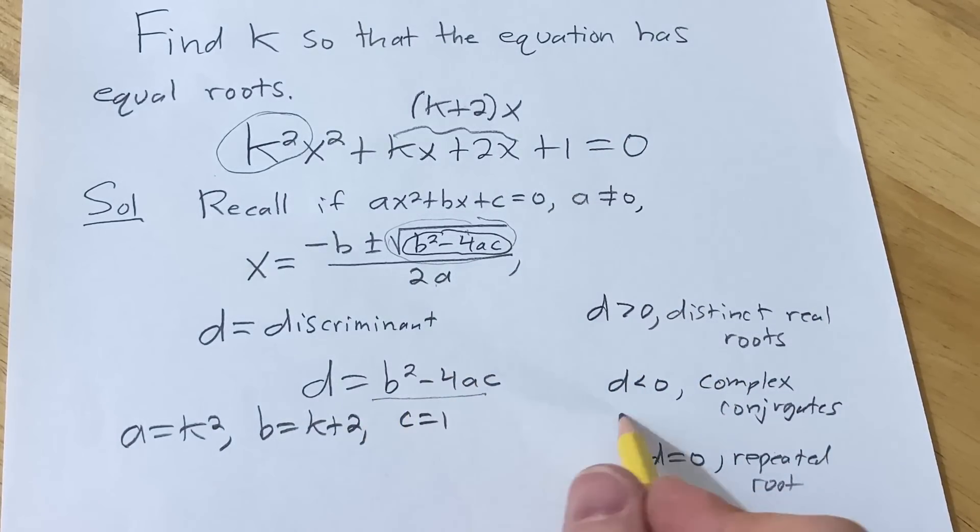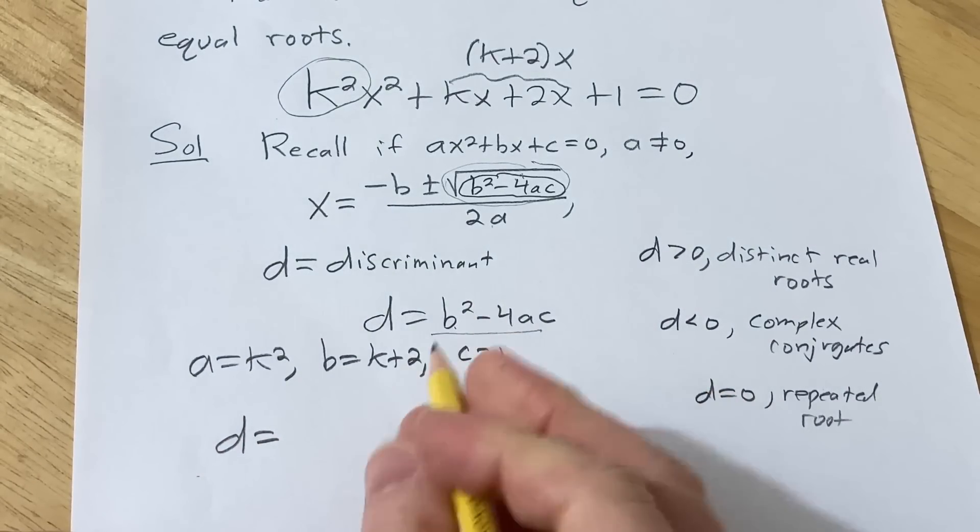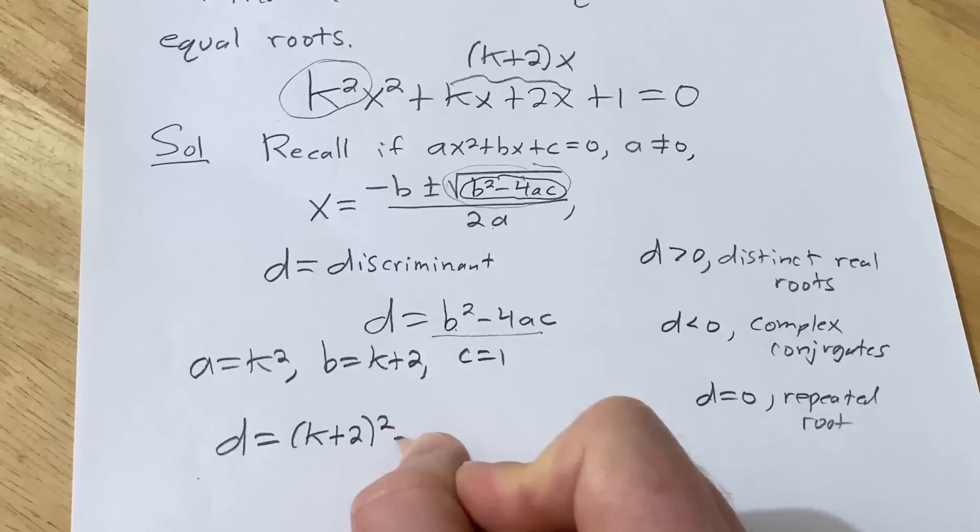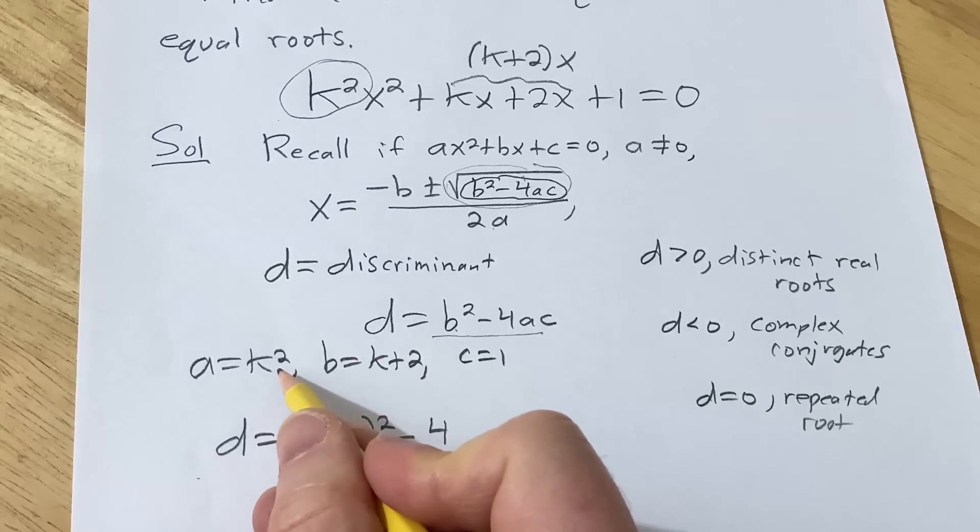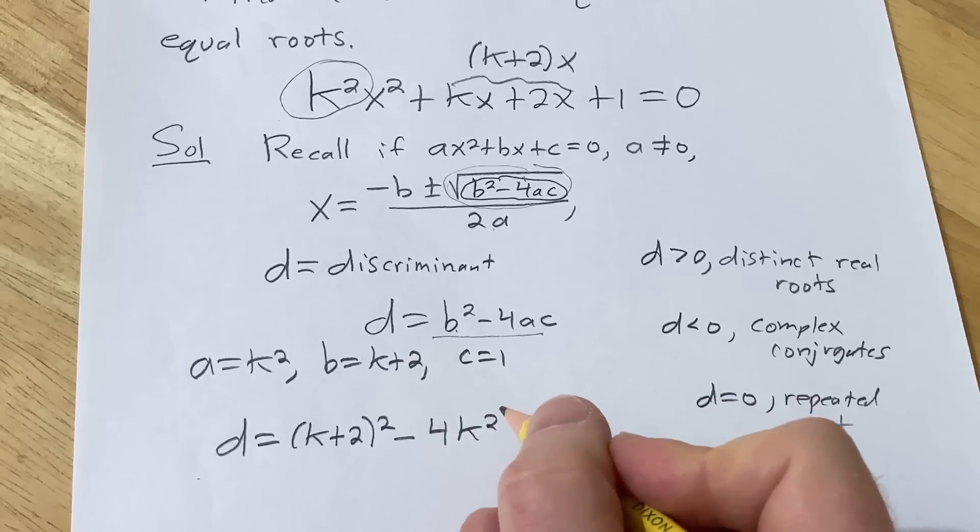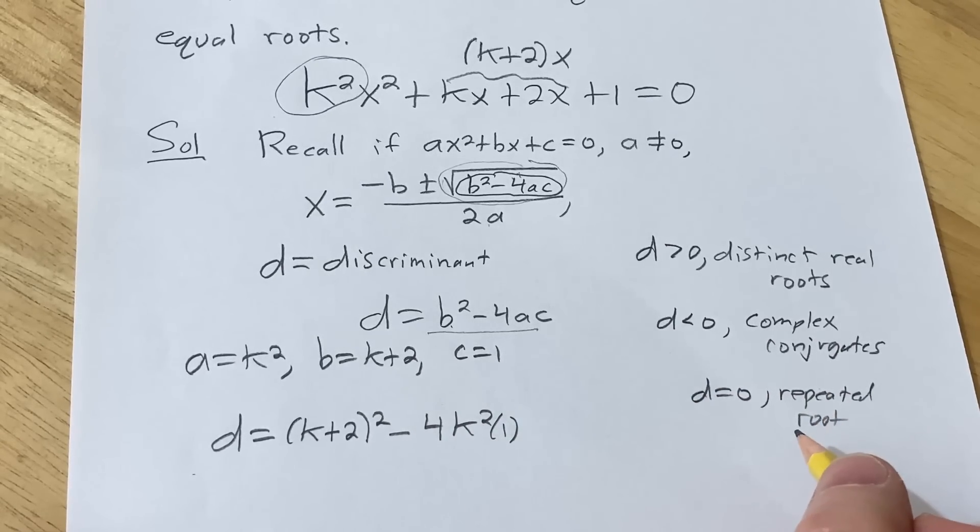Now we just plug it in here and set it equal to 0. So d is equal to, well, it's b squared. So k plus 2 squared minus 4. And then that's k squared. And then c is 1. So I guess I'll write it. And we want it to be 0 because we want a repeated root.